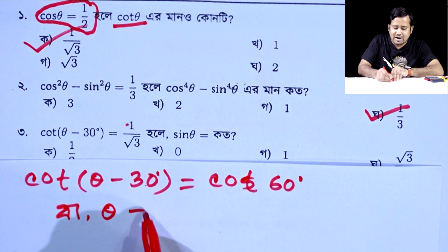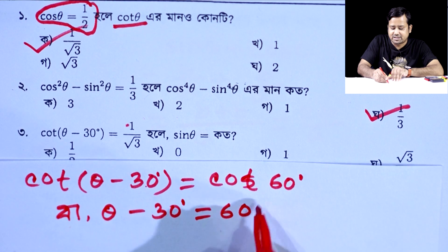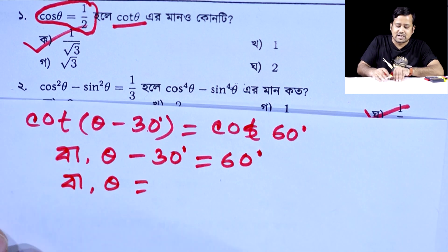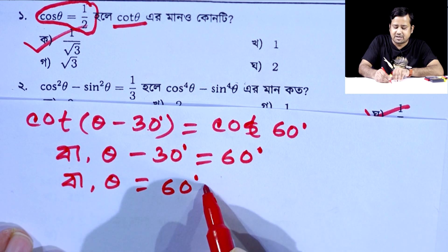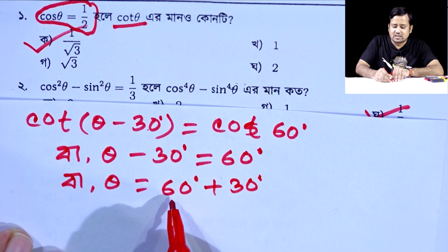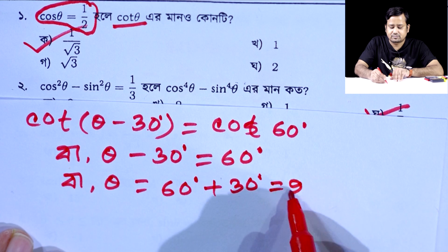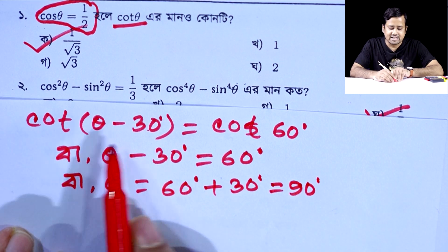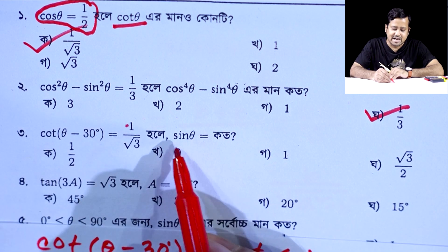So, theta minus 30 degrees equals 60 degrees. Therefore theta equals 60 degrees plus 30 degrees, which gives us 90 degrees.